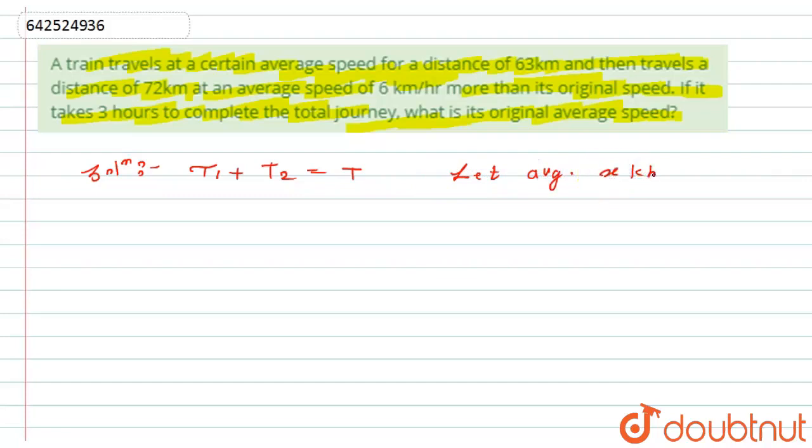Now from here I can say that T1 is nothing but 63 divided by x, plus T2 will be nothing but 72 divided by x plus 6, which will be equals to 3 hours because this whole journey is completed in 3 hours.